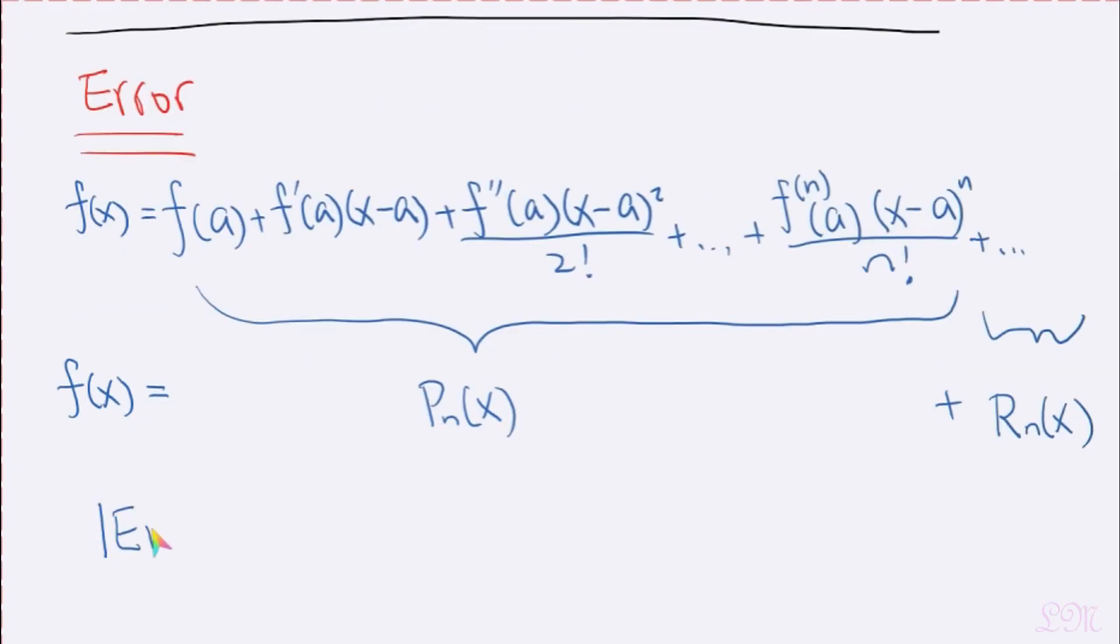So now you'll see what this error means. And we have some equivalent notations here. So again, depending on the source, sometimes you may see the absolute value of the error, sometimes you may see the absolute value of R sub n of x, which is equivalent to the absolute value of the difference between f of x and the nth degree polynomial.